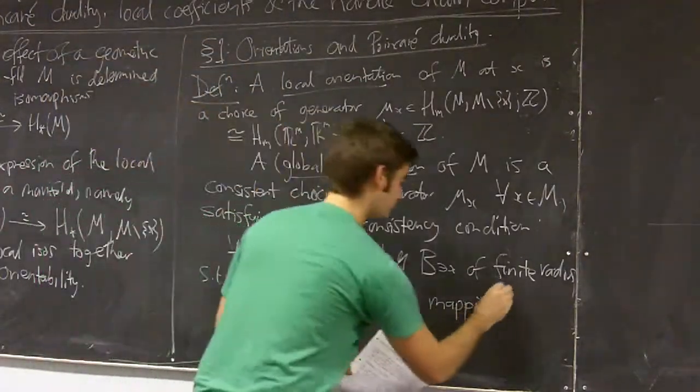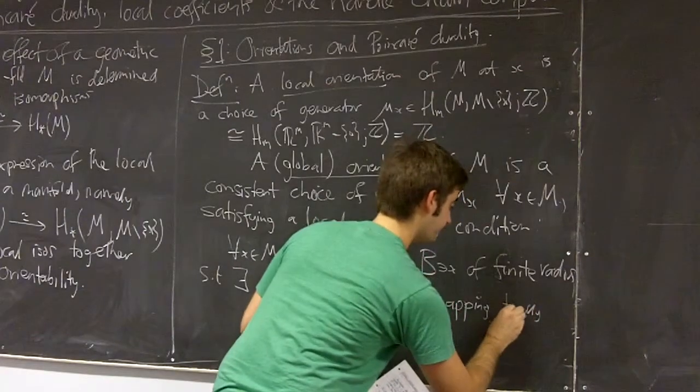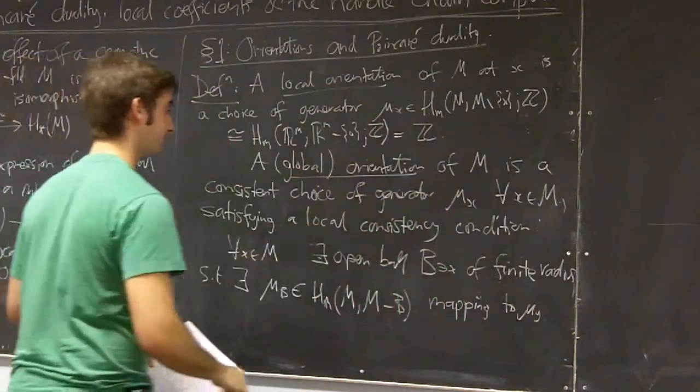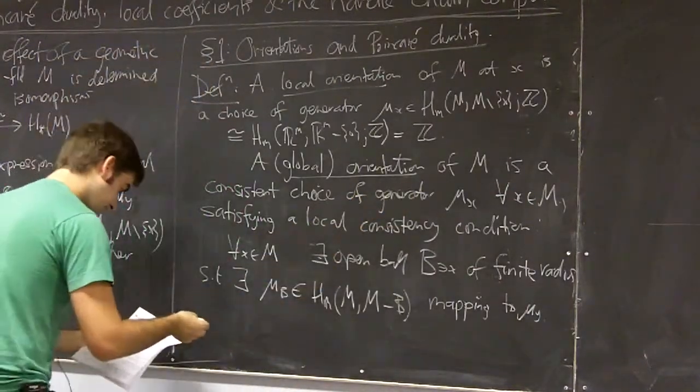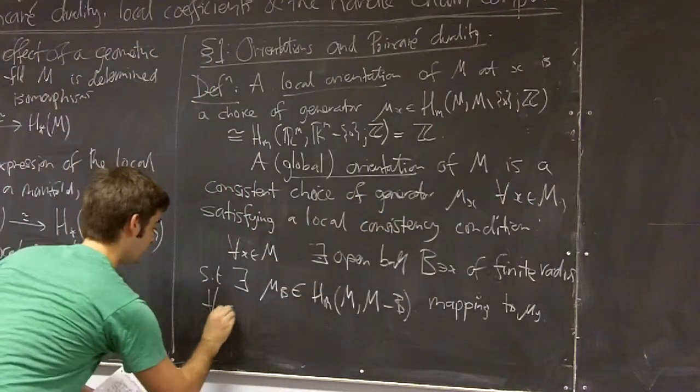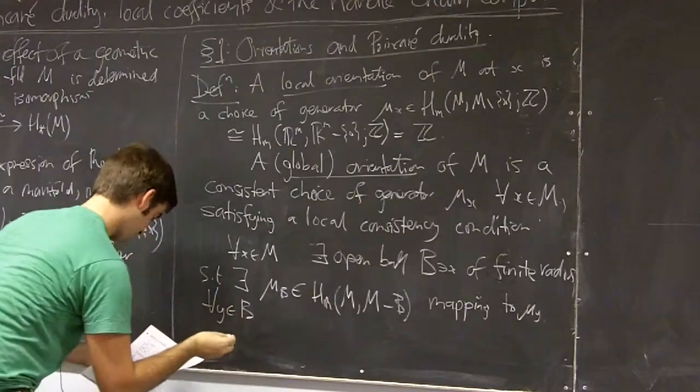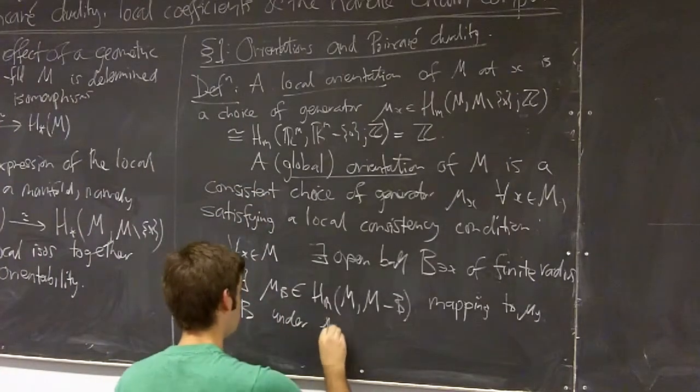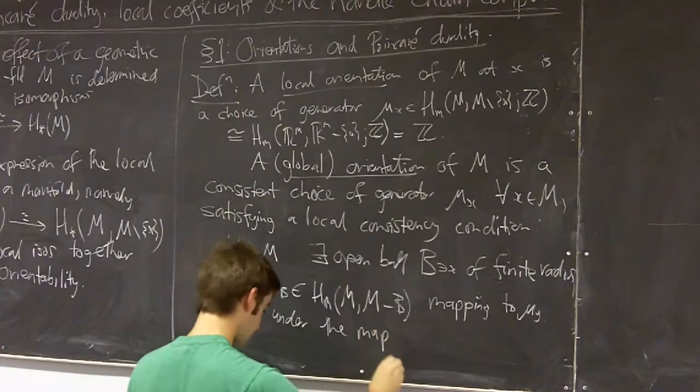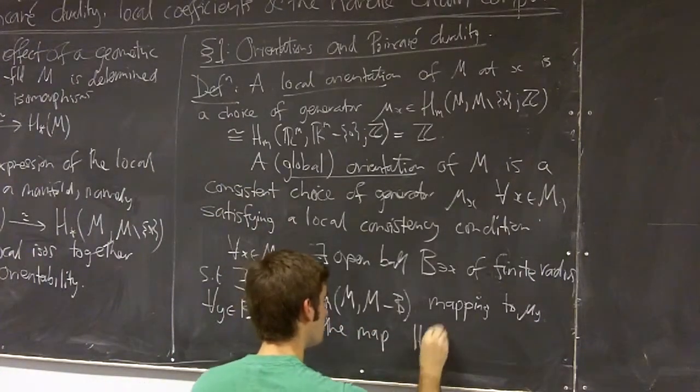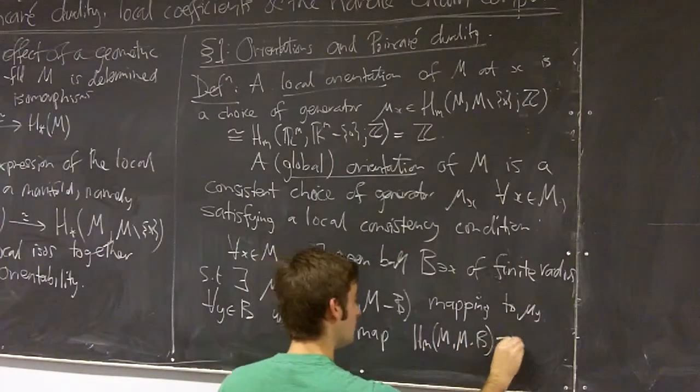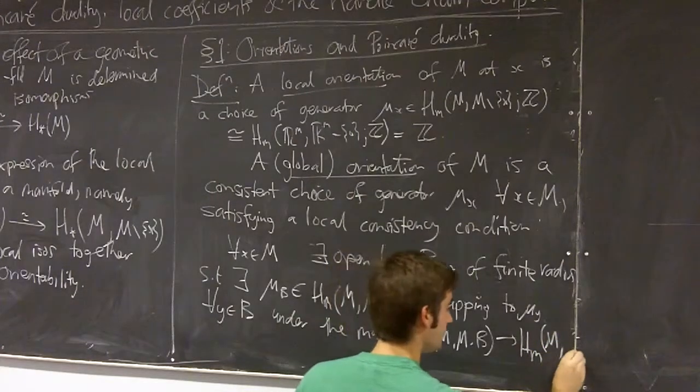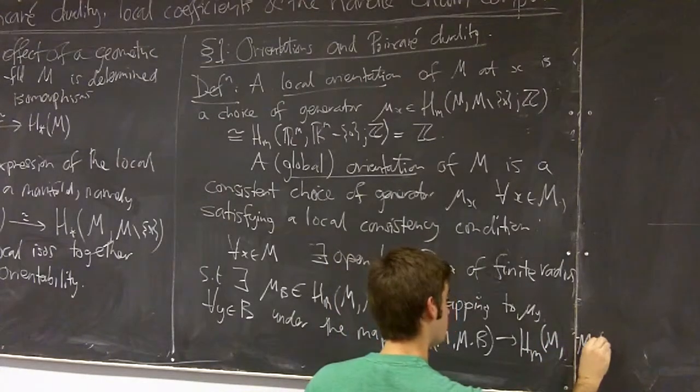to our choice of generator for all points in B. So it should map to μ_y where y is our choice of generator for all y in this ball around x just under the natural map